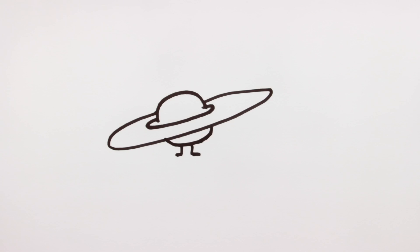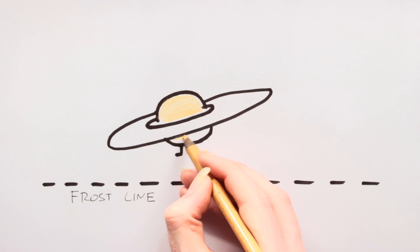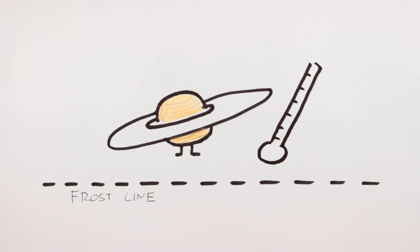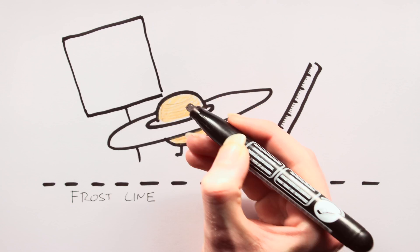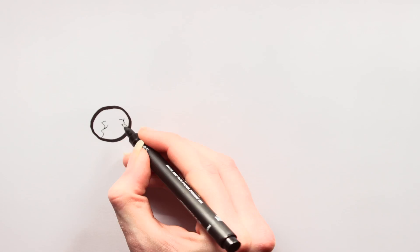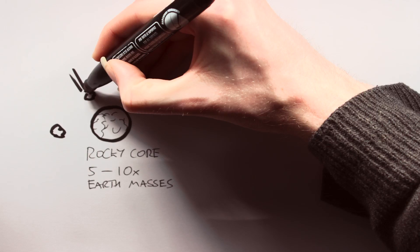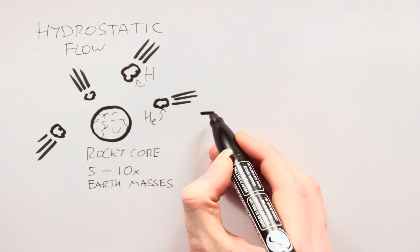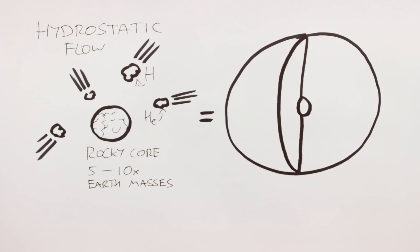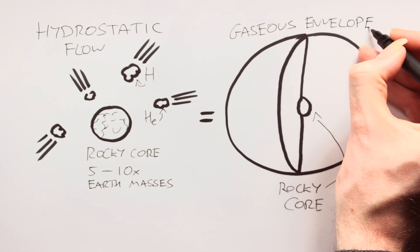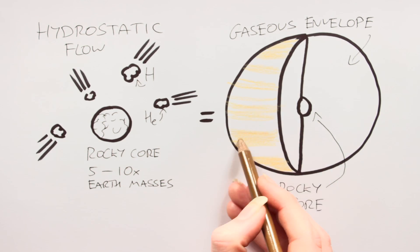The gas giants formed out beyond what is known as the frost line. Here it was cold enough for volatile icy compounds to be solid. The gas giants are thought to have rocky cores of roughly 5-10 Earth masses. This critical level caused a process called hydrostatic flow to occur, sucking in all the hydrogen and helium gas and sticking it to the core, forming a thick gaseous atmosphere or envelope.